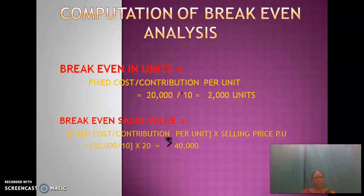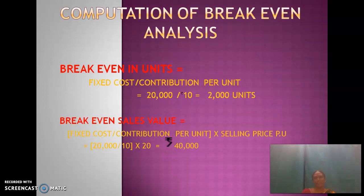Let me explain with an example. The example given has fixed cost of 20,000 rupees and contribution per unit of 10 rupees. Applying the formula — fixed cost divided by contribution per unit — we get 2,000 units. This means up to 2,000 units the company has no profit. If sales are 1,500 or 1,800 units, there is no profit. At exactly 2,000 units there is no profit and no loss. Below 2,000 units there is a loss. From 2,001 onwards, the company has profit — that is why break-even in units is calculated.